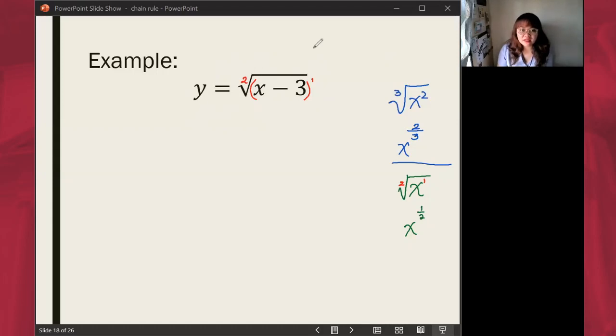If we rewrite this in exponential expression, this now becomes x minus 3 raised to one-half, which is now easier to solve in terms of your chain rule.